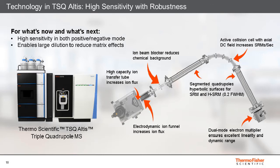The triple quadrupole used in all these experiments was the TSQ-ALTIS. Innovation in the ion source, mass analyzer, and RF electronics offers high sensitivity, reduced noise, and more data points with high SRM rates. You can confidently quantify compounds at extremely low concentrations in the most challenging food matrices. The system offers very high sensitivity in negative mode, which is crucial to reach low concentration levels for anionic pesticides. Novel ion optics reduce chemical background by ion beam blocking and source design, increasing robustness, reducing maintenance, and improving reproducibility.